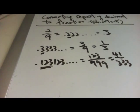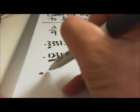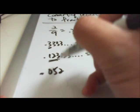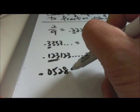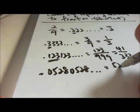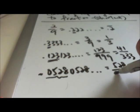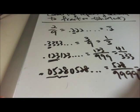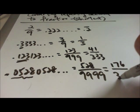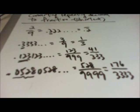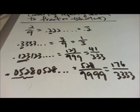How about 0.528528 continuous? This will be 528 over 999. In this case, you notice that 8 plus 2 is 10, plus 5 is 15. Divide by 3 to get 176 over 333.